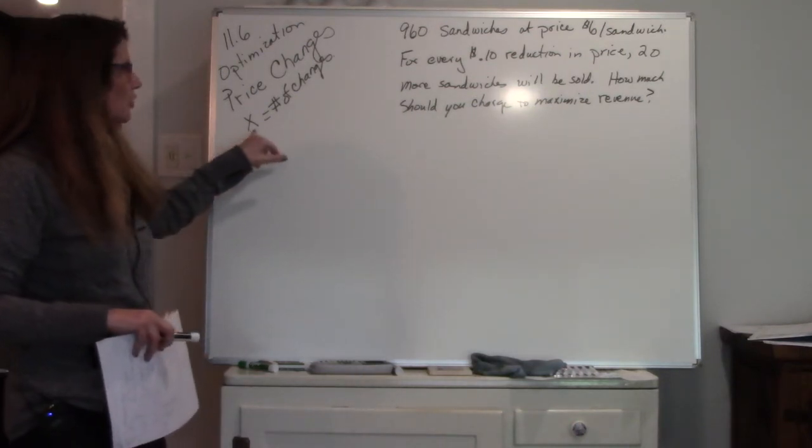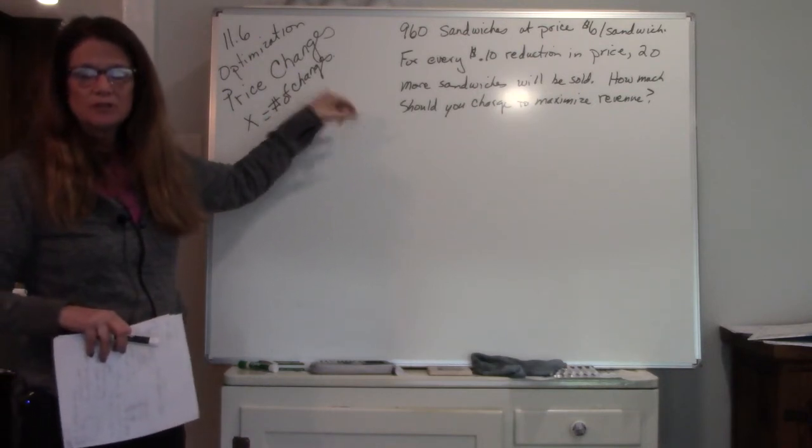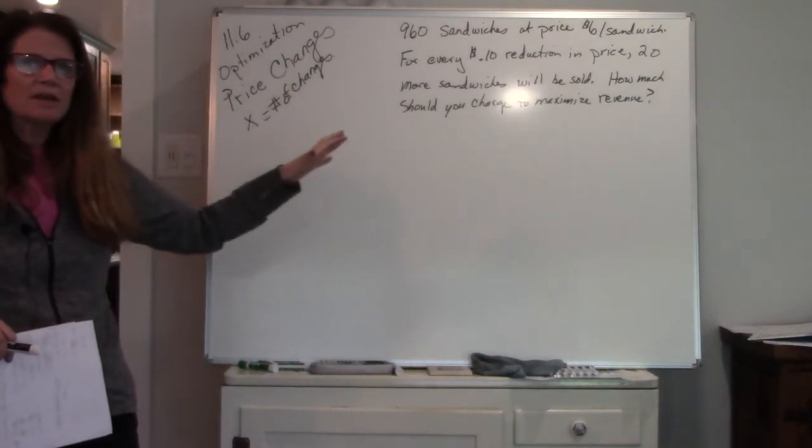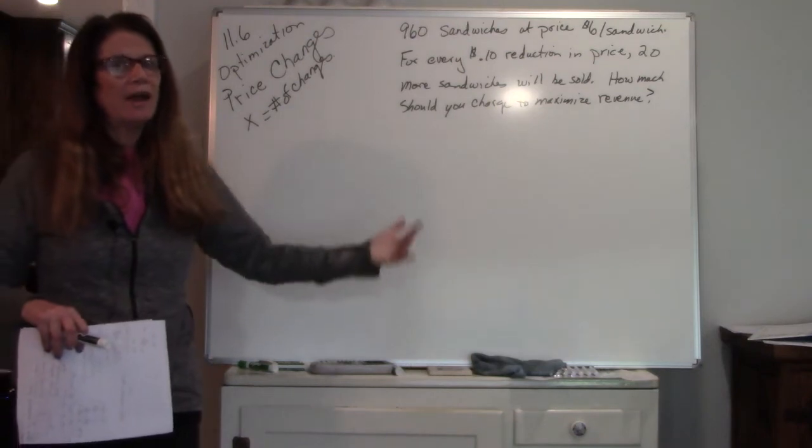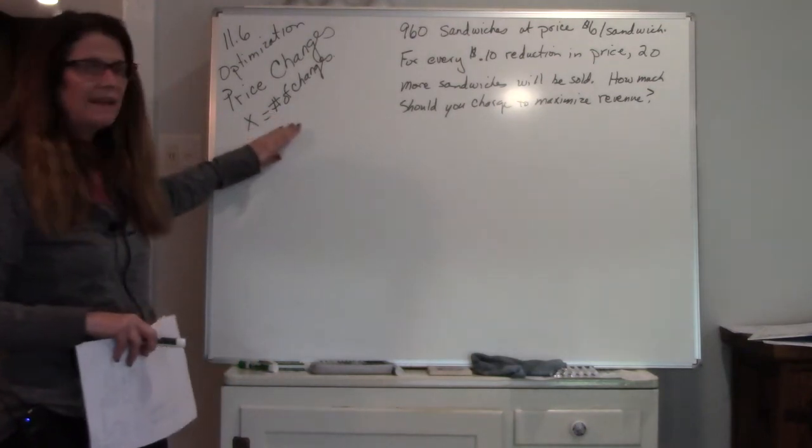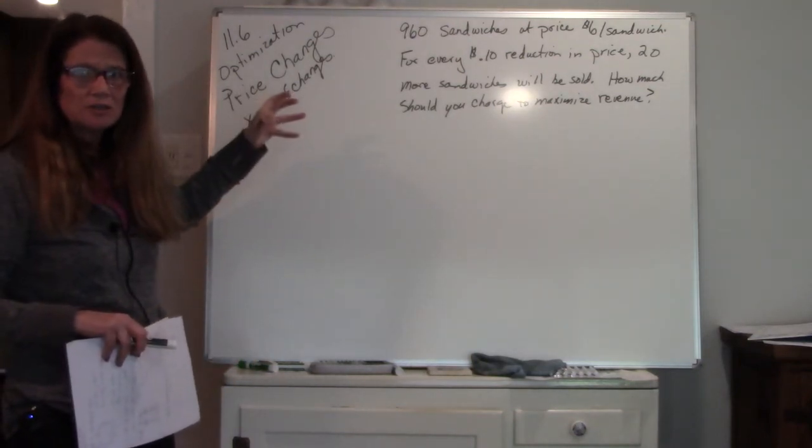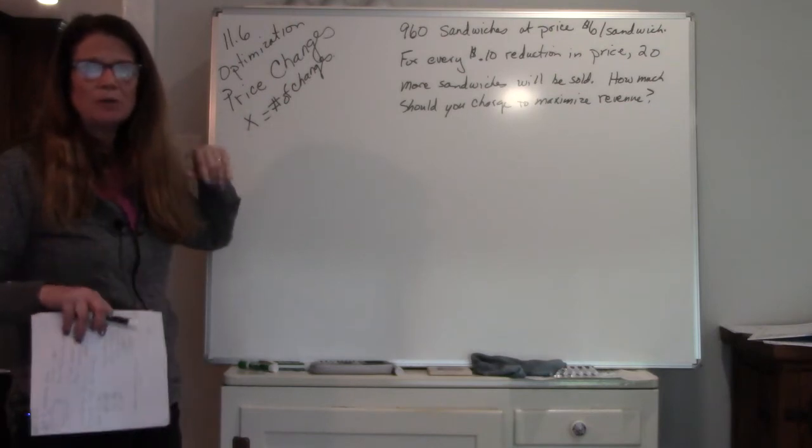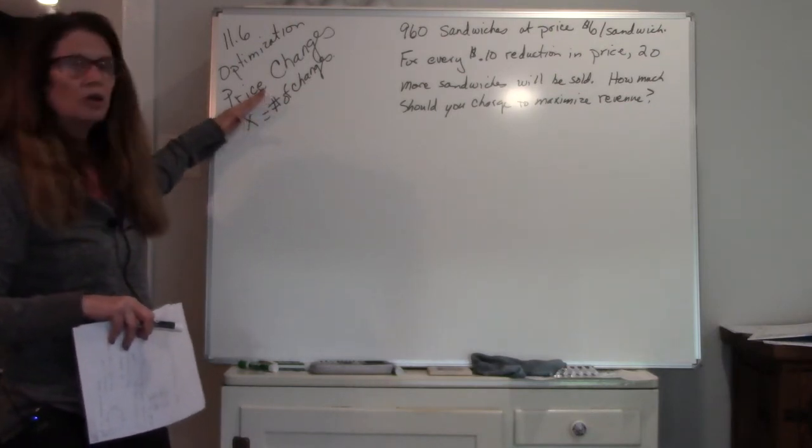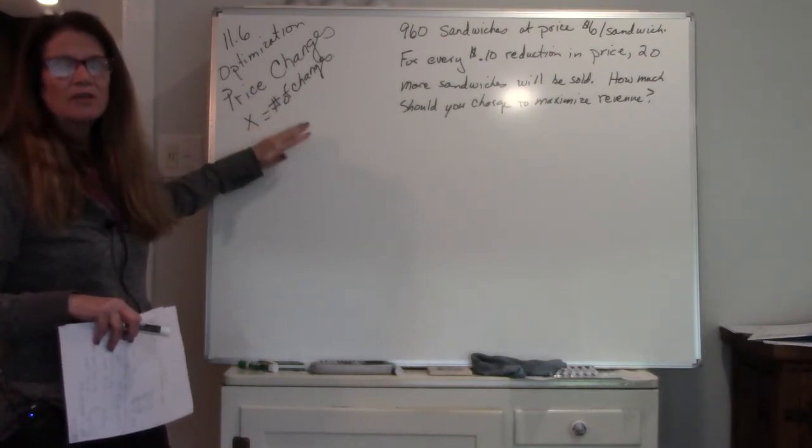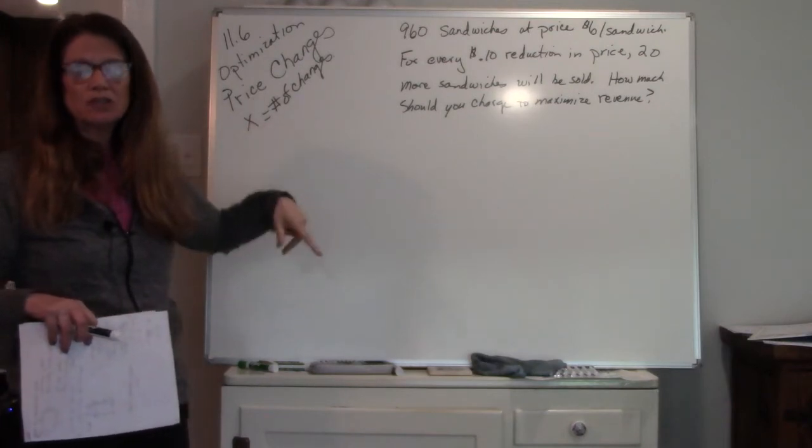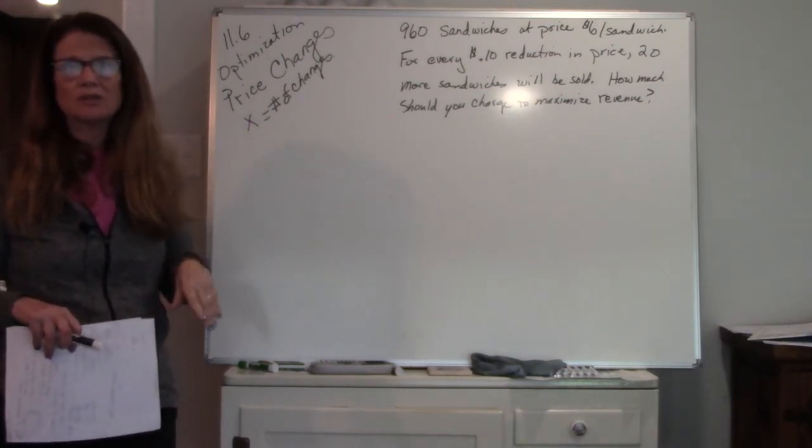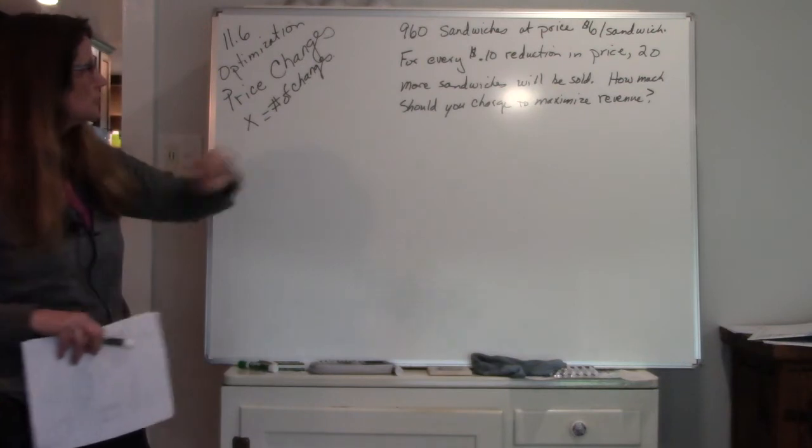So for this one, your X represents the number of changes. Always in the past our X represented the number of items. So in this case, when a price changes and it changes how many products you can sell, these are called price change equations. The X represents the number of changes or the number of price changes that you can use.